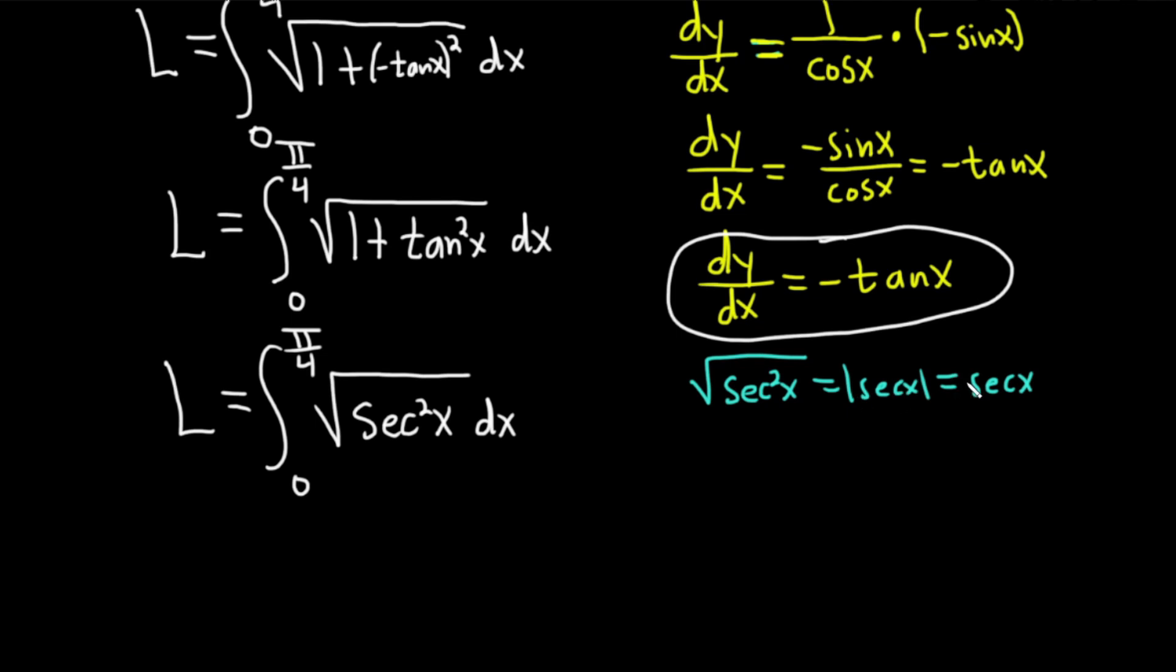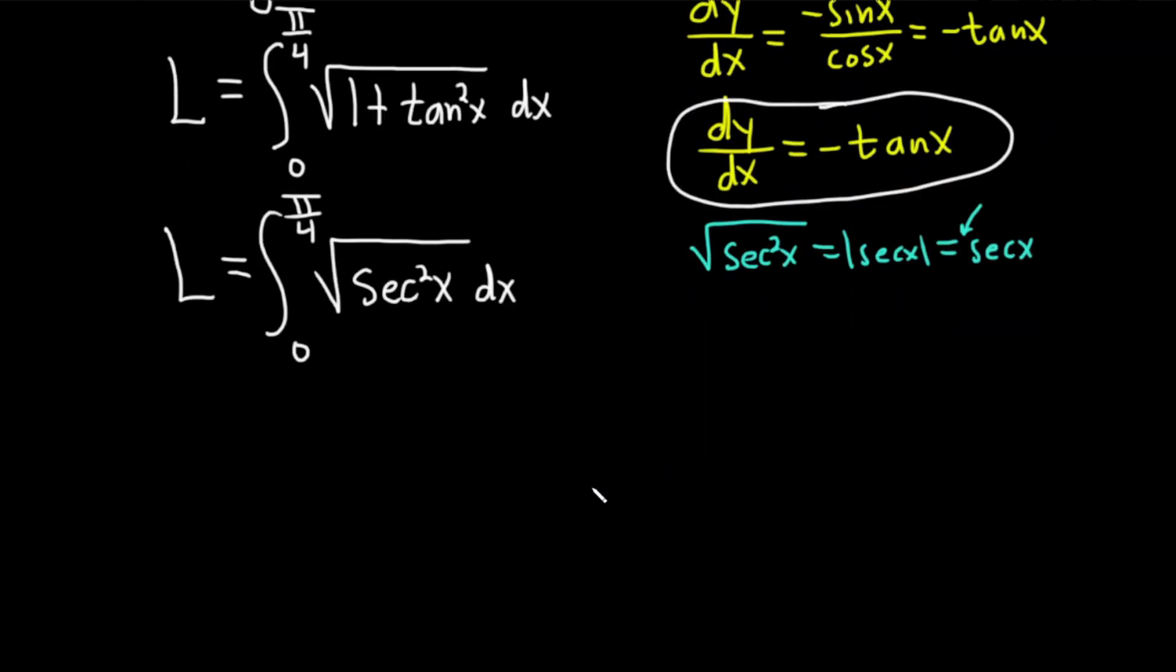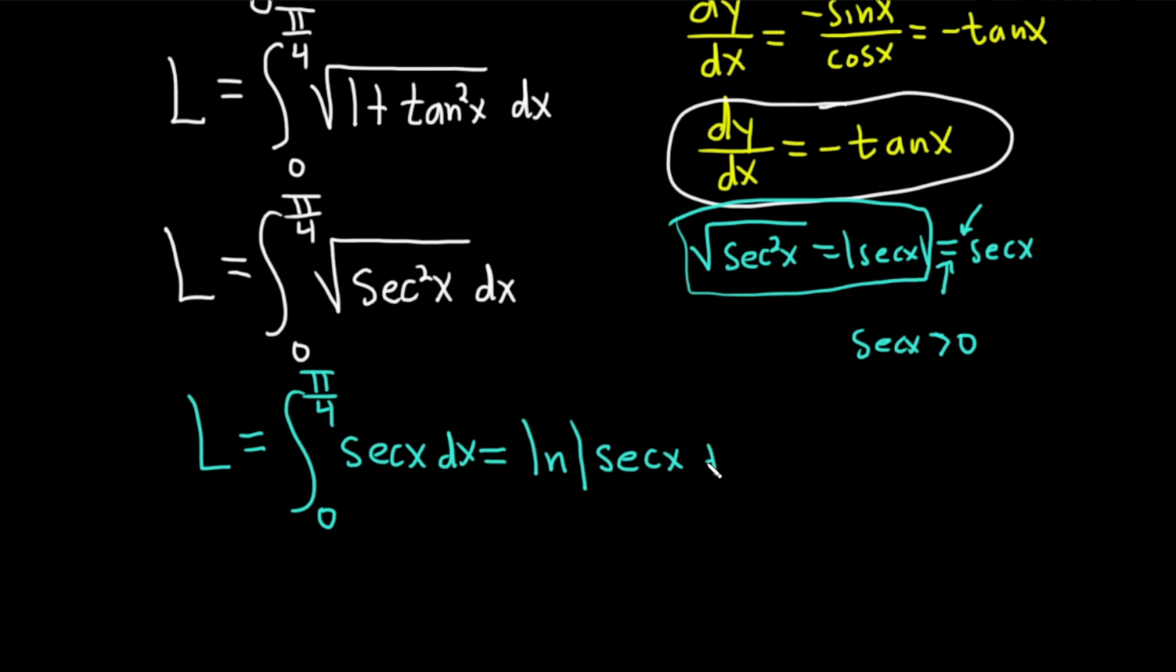So it matters. It just doesn't matter in this particular problem. If we had been in a different interval where secant was negative, then we would have to put a negative sign in front of the secant. So here we have secant x dx. This is a formula that you might not remember. Once you derive the formula for the integral of secant, you won't forget it. But the formula says it's the natural log of secant plus tangent. Totally worth memorizing this formula because it comes up so much.